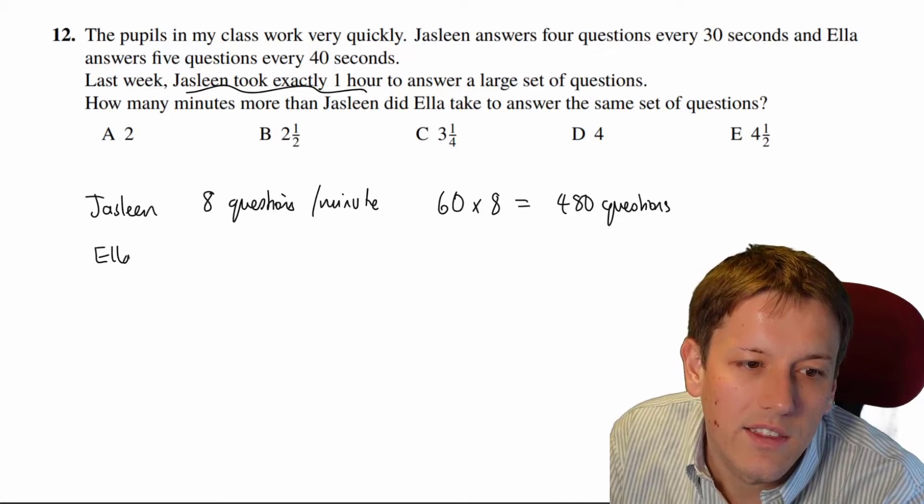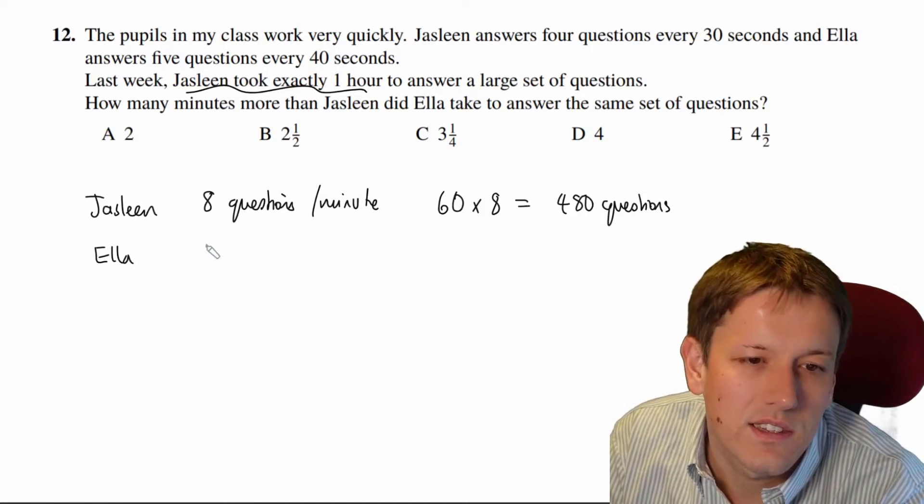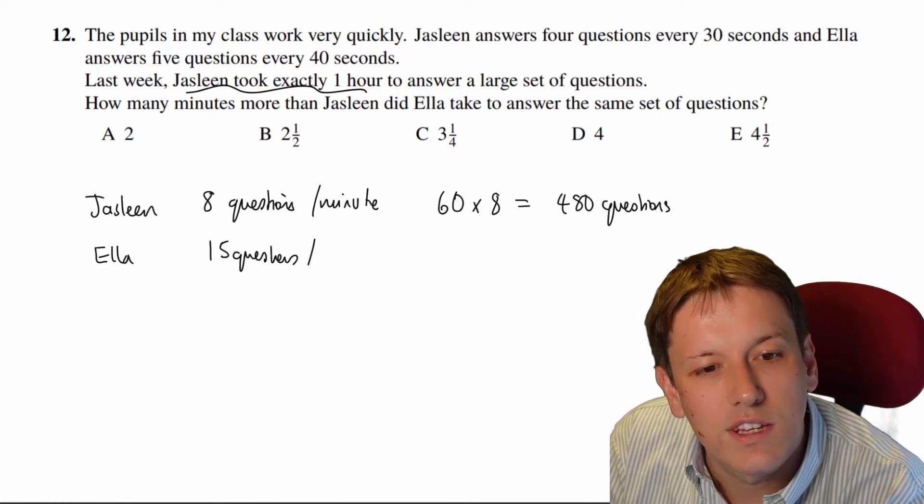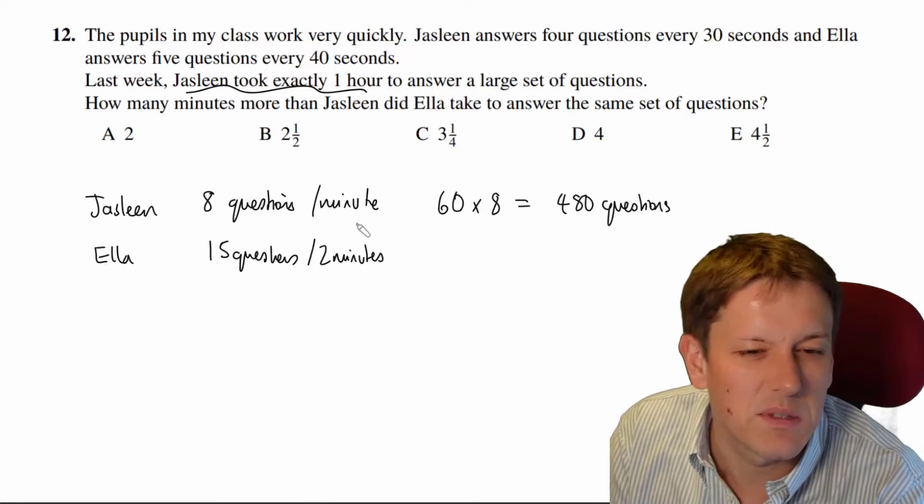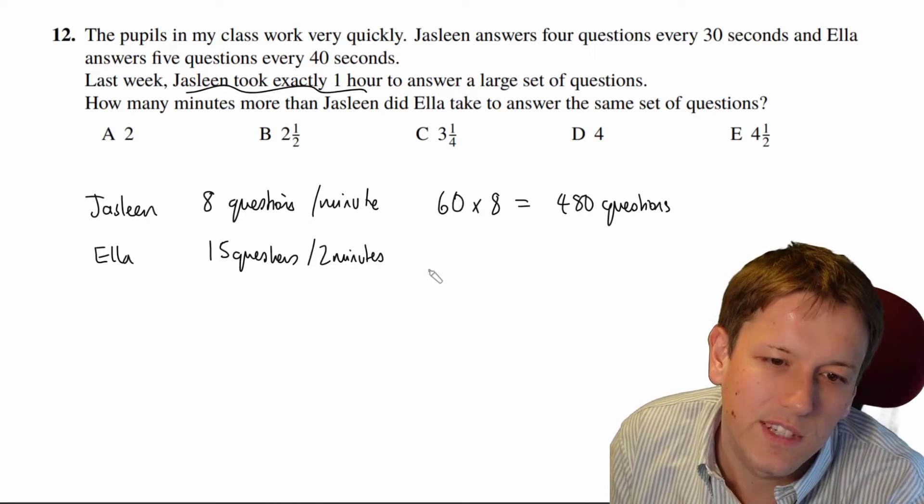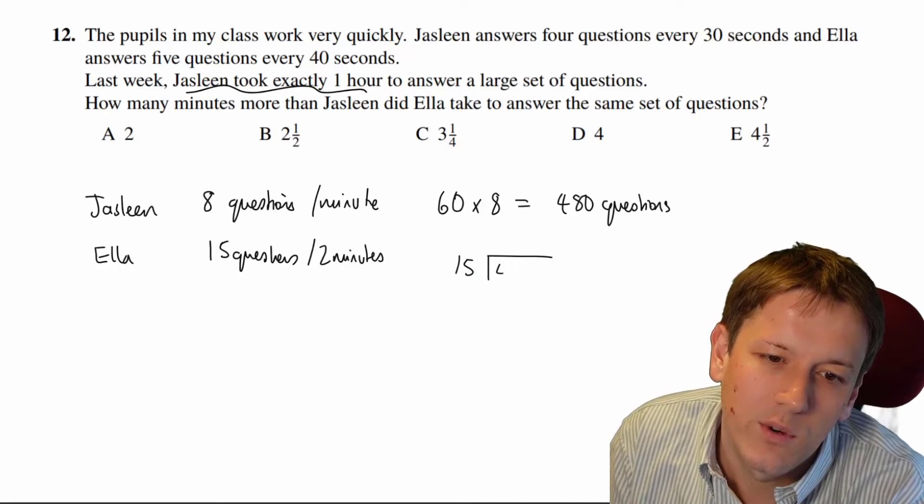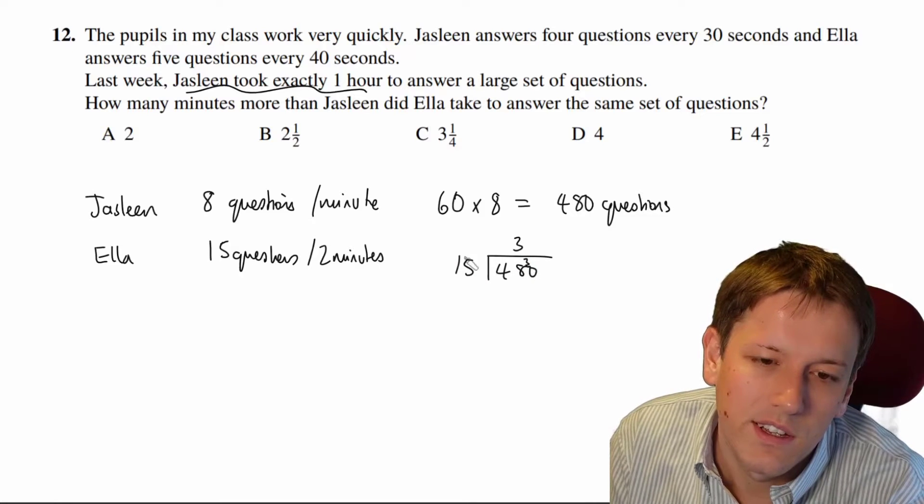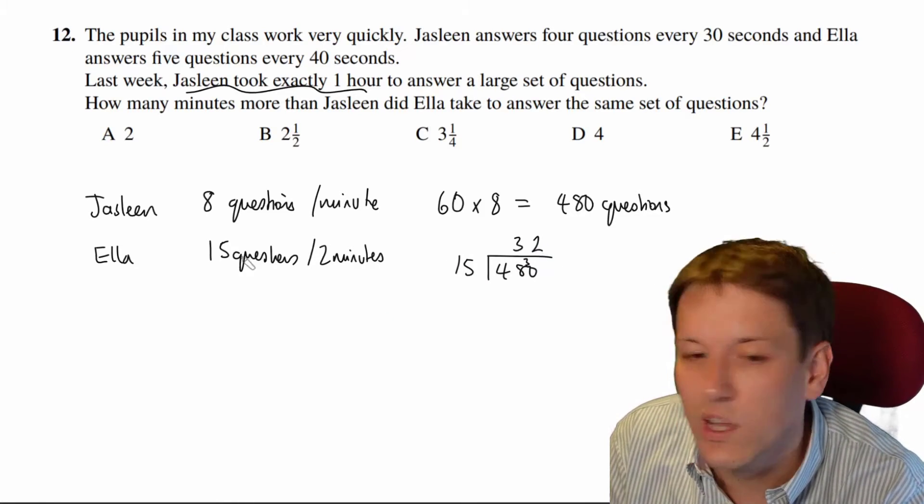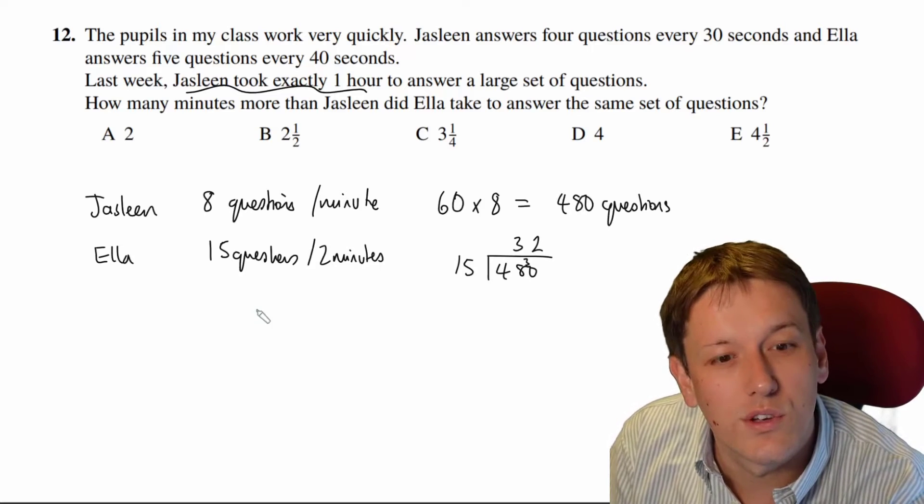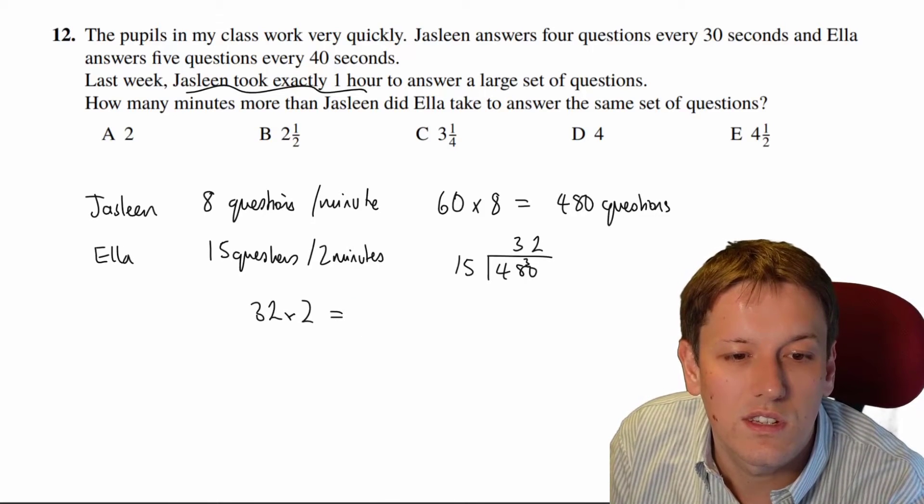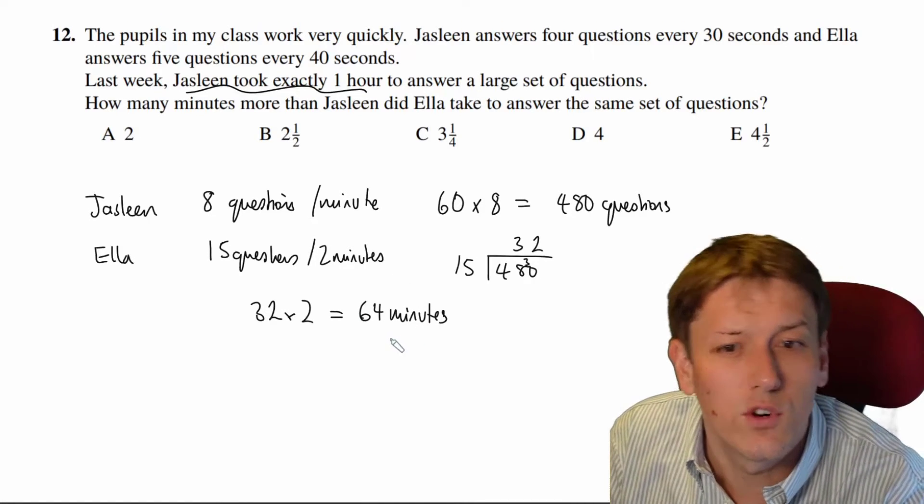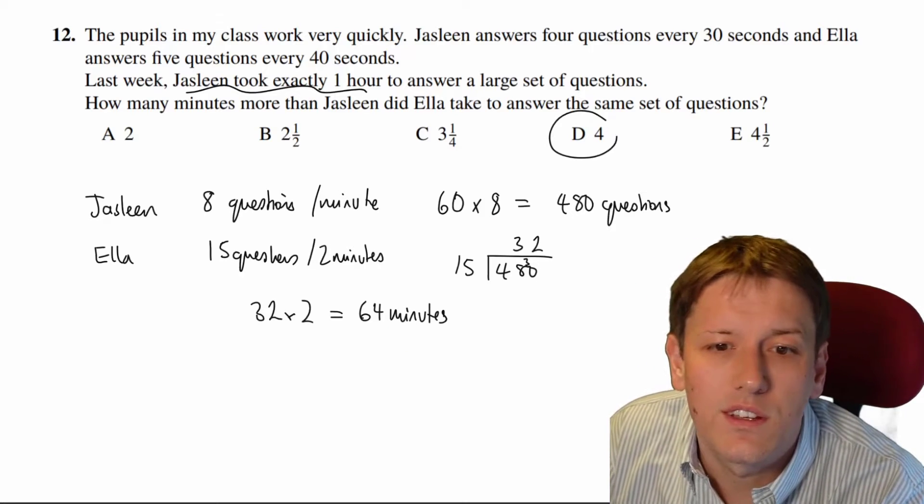Now what about Ella then? Well Ella does five questions every 40 seconds and so if I multiply that up by three that's 15 questions every two minutes and that's probably the easiest way to do this, keep the number of minutes a nice whole number. So how many lots of 15 questions are there? Well I'll do 480 divided by 15. 48 divided by 15 is 3 with 3 left over, 30 divided by 15 is 2 so that's 32. So Ella needs 32 lots of 2 minutes to do these questions. 32 times 2 is 64 minutes and 64 minutes is 4 more minutes than an hour and so the answer here is D.